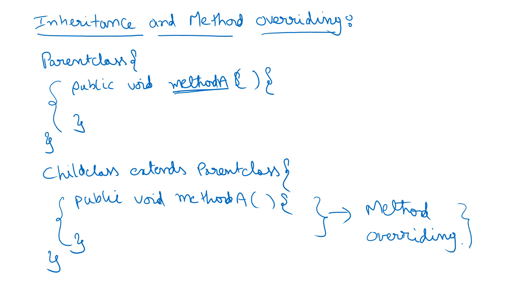This is called method overriding — when we define a method in the child class that is already there in the parent class, that is called method overriding. Don't get confused with method overriding and overloading. Overloading is in the same class when we define two or more methods with the same name but with different parameter types. Method overriding is when the child class contains the same method as that of the parent class.